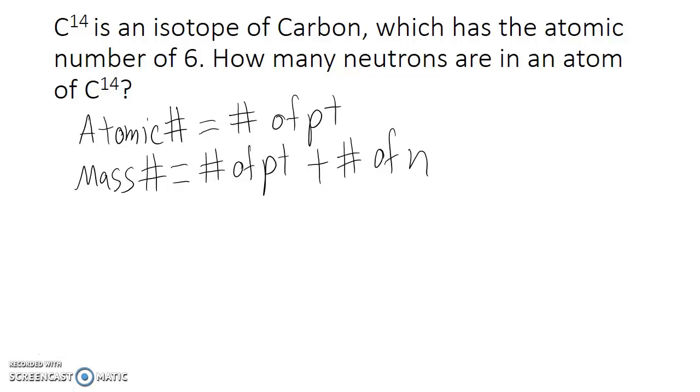And so in this case, we're told that carbon-14 is an isotope of carbon. The 14 is the mass number. We're also told that carbon has the atomic number of 6. So how many neutrons are in an atom of carbon-14? Well, in this case, we know the mass number. We know the atomic number. We're trying to solve for the number of neutrons.